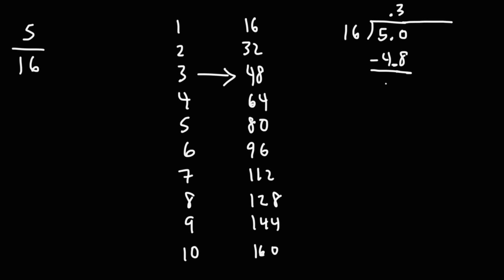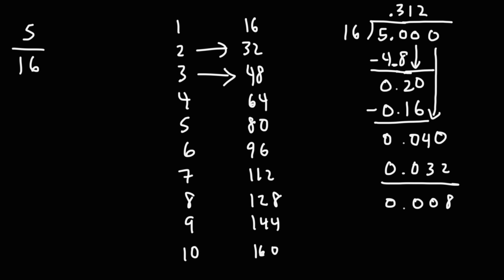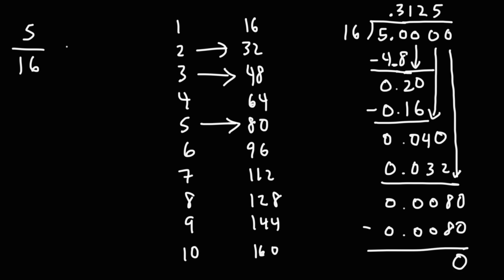50 minus 48 is 2, so we get 0.2. Let's add a 0, so this becomes 20. 16 goes into 20 one time. 16 times 1 is 16, and 20 minus 16 is 4 — we get 0.04. Bringing down another 0 gives us 40. 16 goes into 40 two times. 16 times 2 is 32, and 40 minus 32 is 8. Adding another 0 gives us 80. 16 goes into 80 exactly five times, giving a remainder of 0. So 5 over 16 is equivalent to 0.3125 as a decimal.